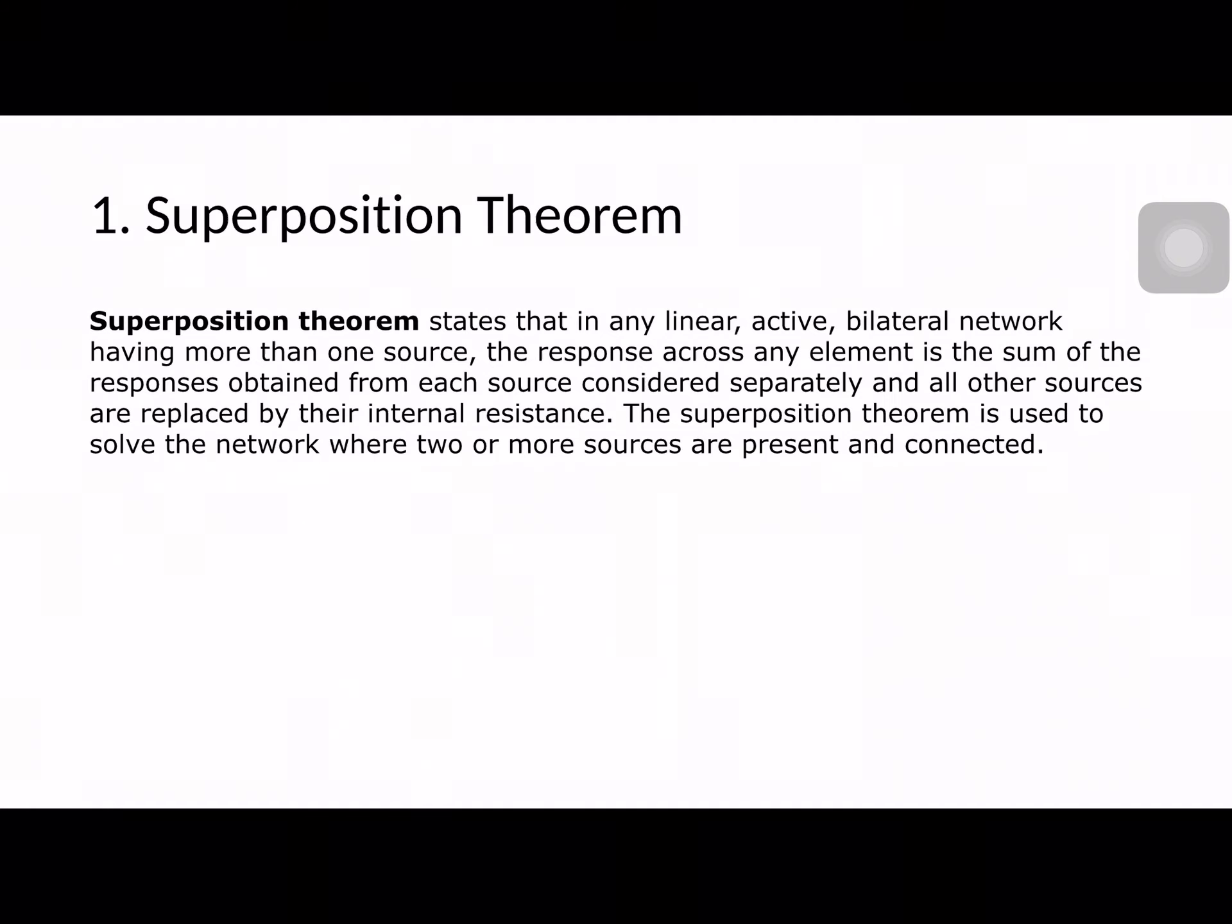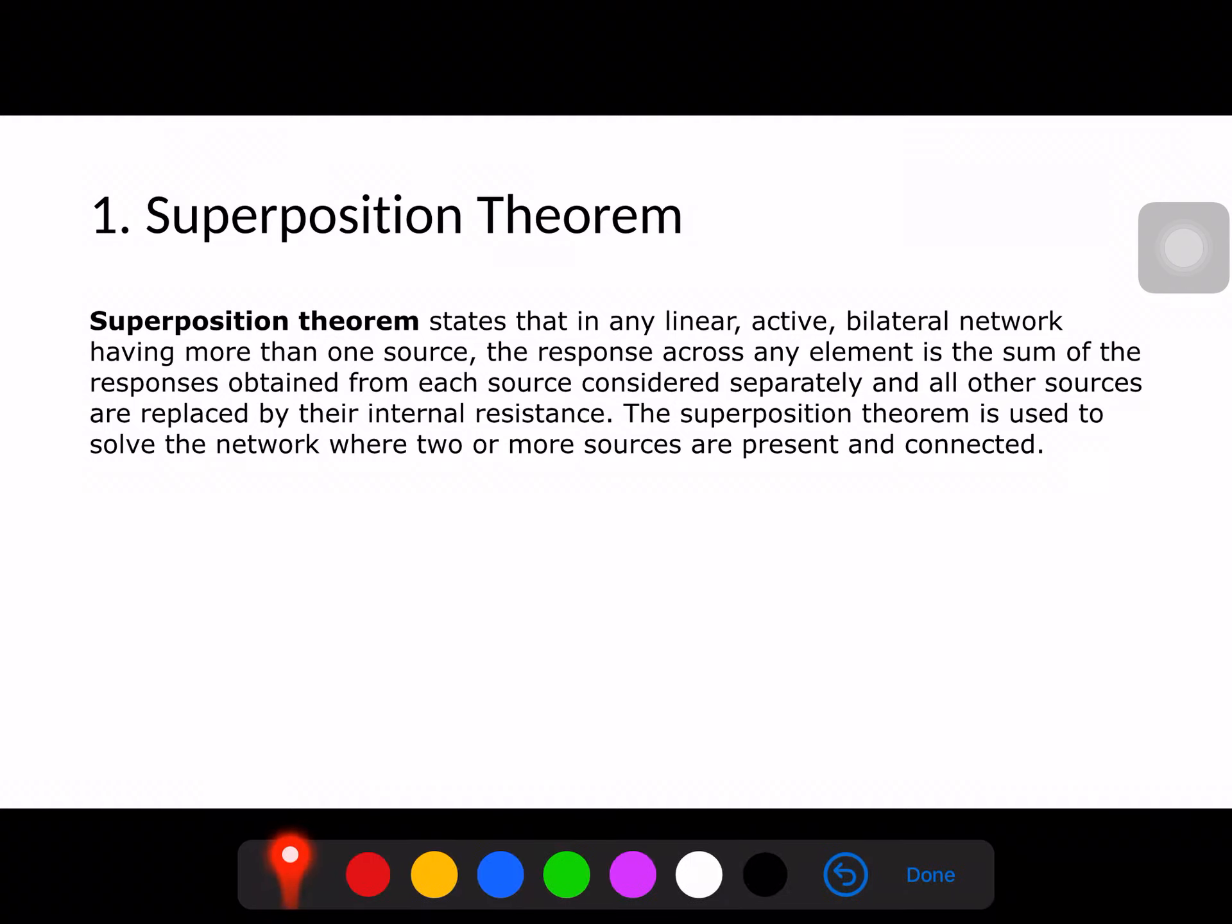So basically what is superposition theorem? This is the theoretical definition. If you see here, superposition theorem states that in any linear active bilateral network having more than one source, the response across any element is the sum of the responses obtained from each source considered separately and all other sources are replaced by their internal resistance. This theorem is used to solve the network where two or more sources are present and connected. This can also come in your question papers for two marks probably.